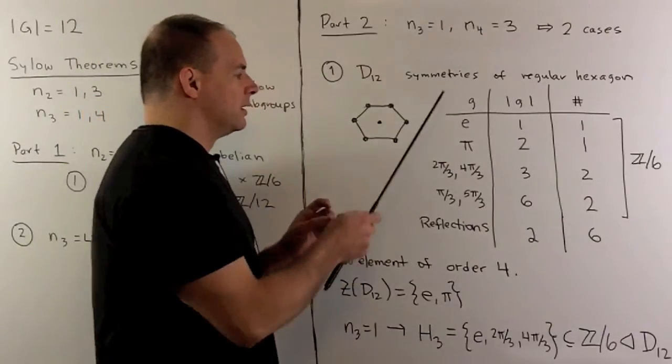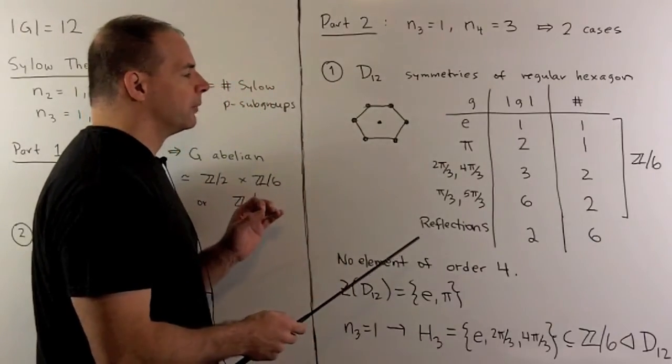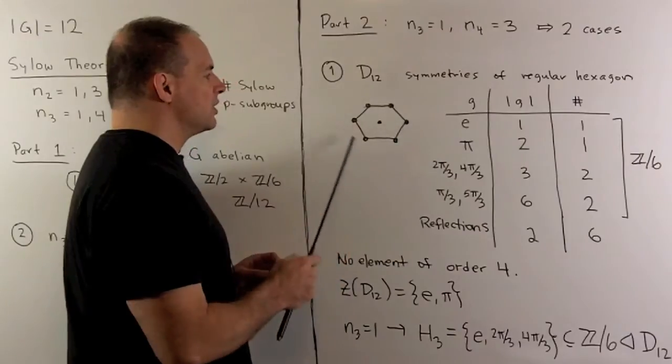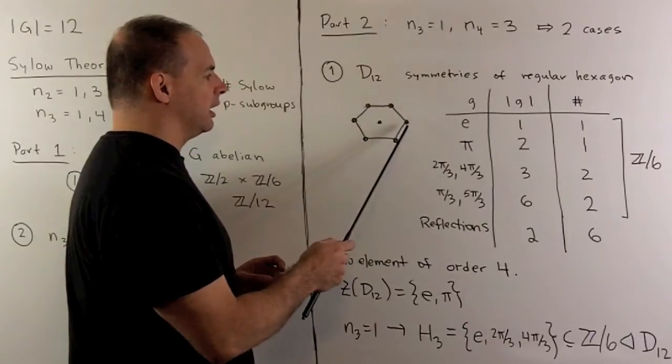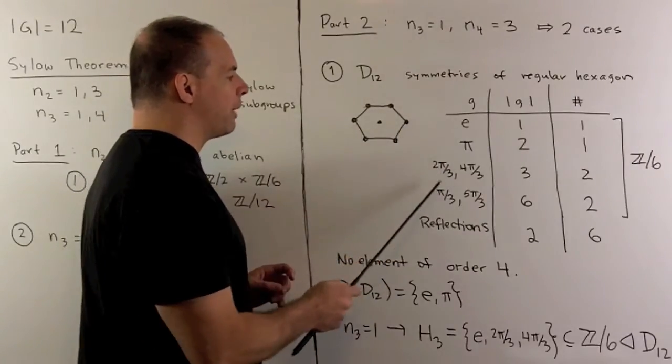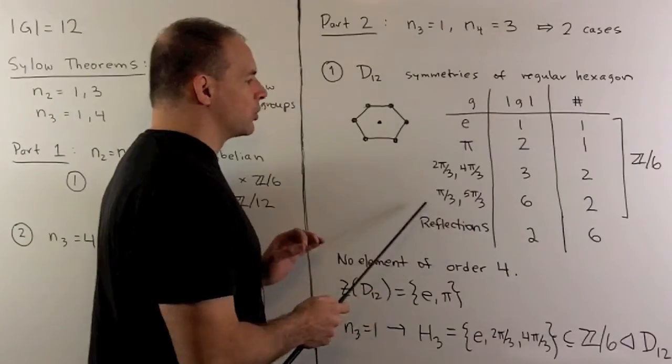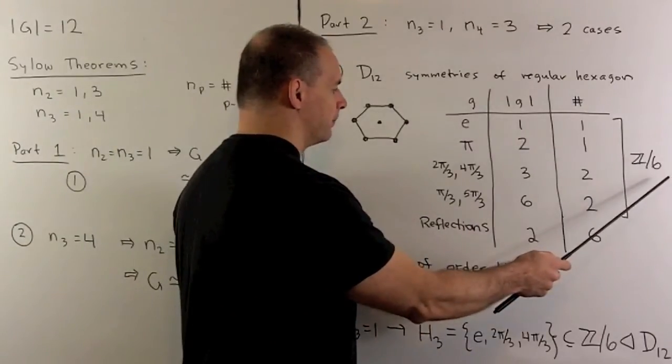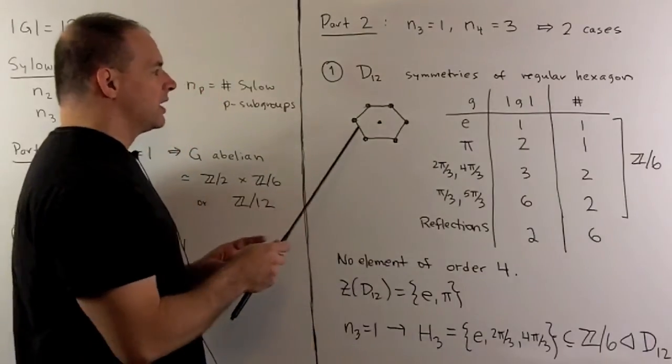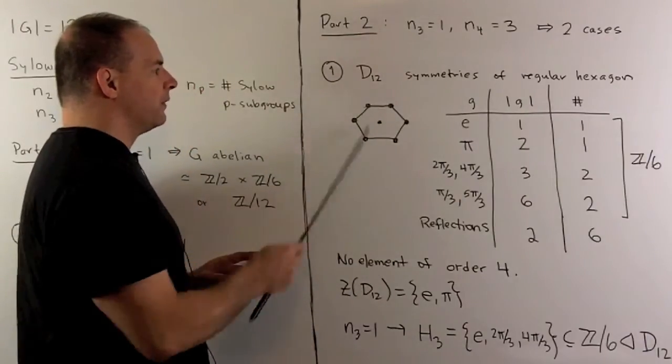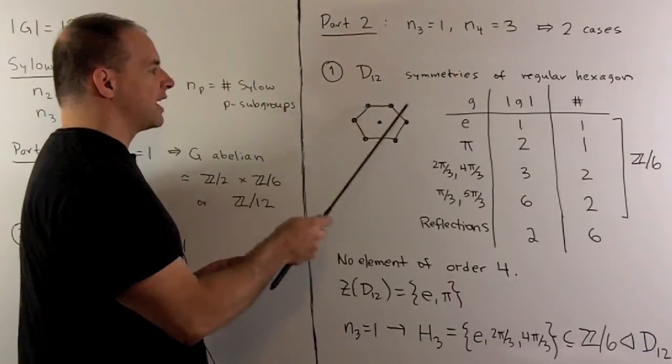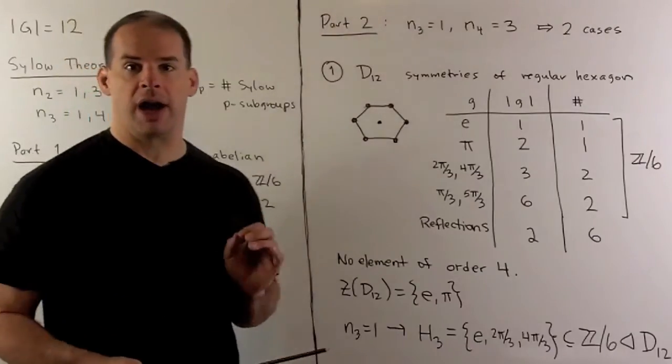Now, if we list the different types of elements that occur, well, first we have six rotations, including the identity. We'll list each of those by their angle. That's going to form a Z mod 6. Then what's left over are going to be the six reflections. You'll note we have six axes of reflection for a regular hexagon.